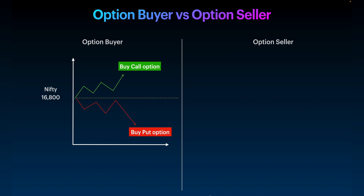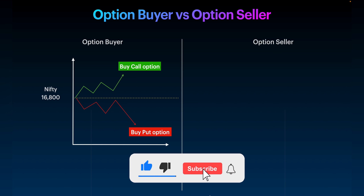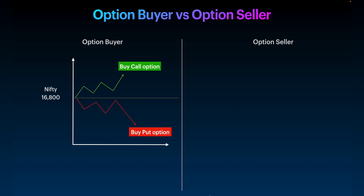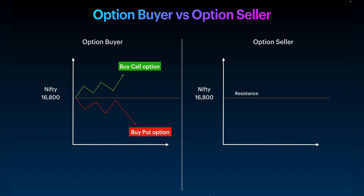The option buyer has two choices: he can buy a call option if he feels the market will go up, or buy a put option if he feels the market will go down. For an option seller, it is the complete opposite. If the option seller thinks 16,800 is a strong resistance level — meaning the market will not break it by expiry — he should sell a call option. If he feels 16,800 can act as support and the market can go up, he will sell a put option.